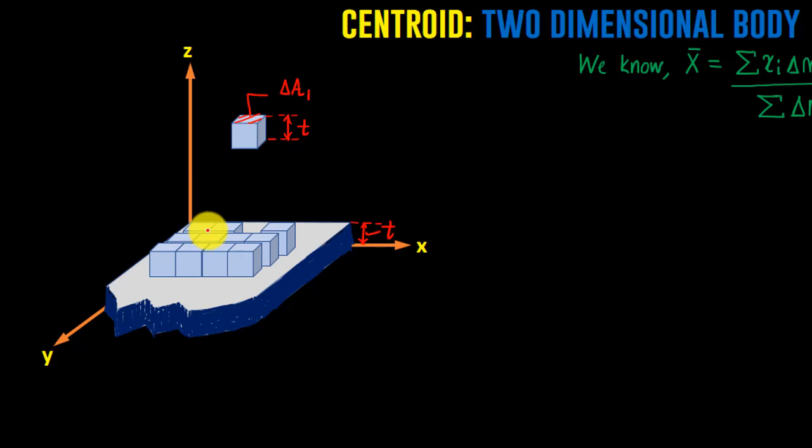It may appear that I've taken identical elements, but you can take non-identical elements too. In that case, the cross-sectional area Δa will be different for each element. We know that mass is a product of density and volume.